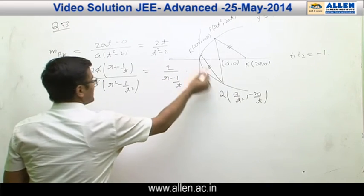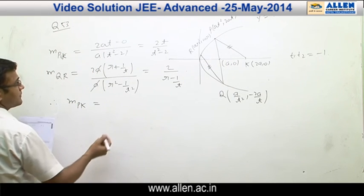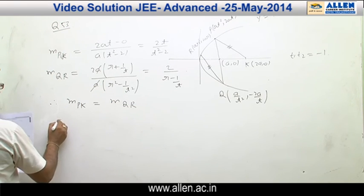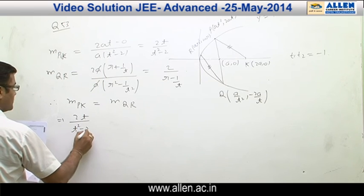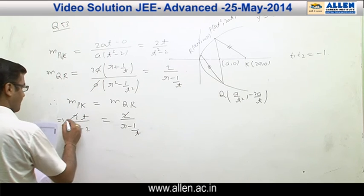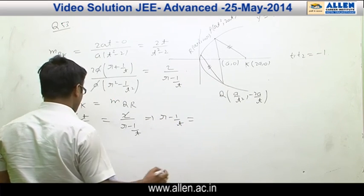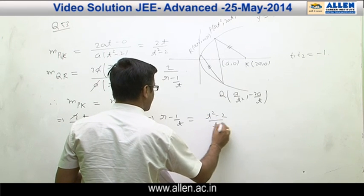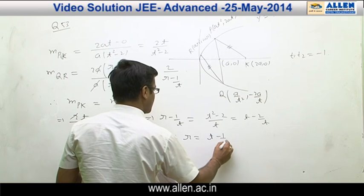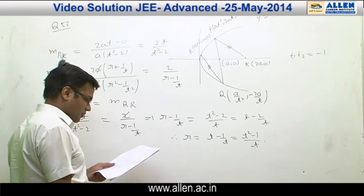Since slope of PK equals slope of QR, we get: 2T/(T² − 2) = 2/(R − 1/T). This implies R − 1/T = (T² − 2)/T = T − 2/T. Therefore R = T − 1/T + 1/T... that is R = (T² − 1)/T. And the answer of this question is option T² − 1 over T.